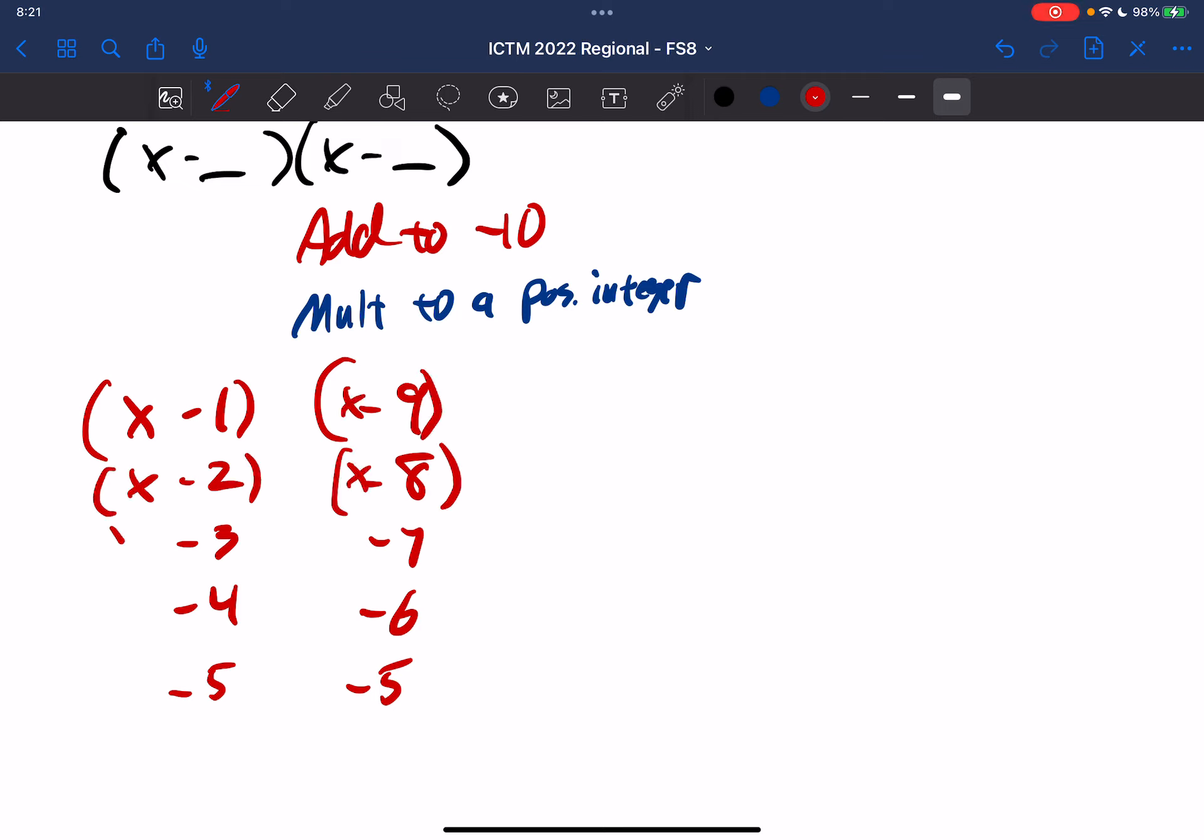So the way it's going to factor is like this, any of these different possibilities. Now all of these equals 0 over here.